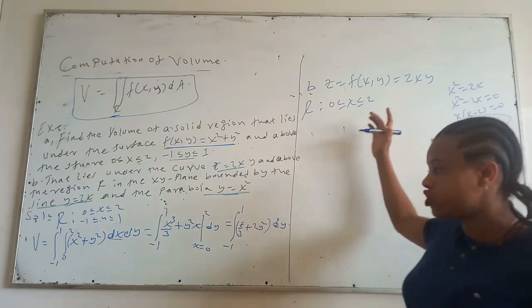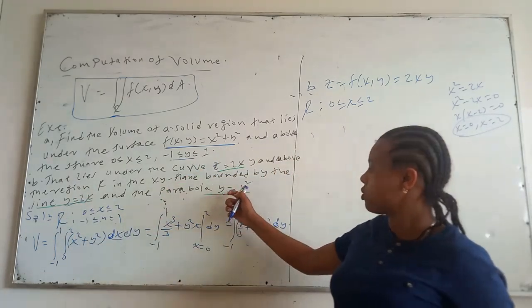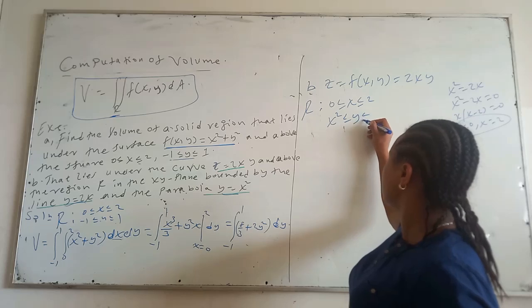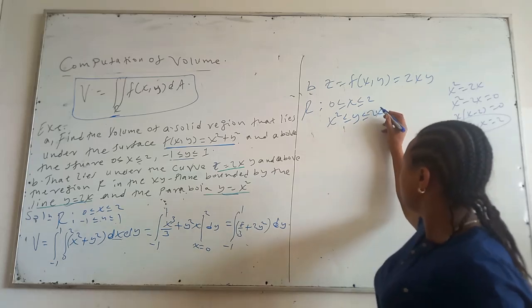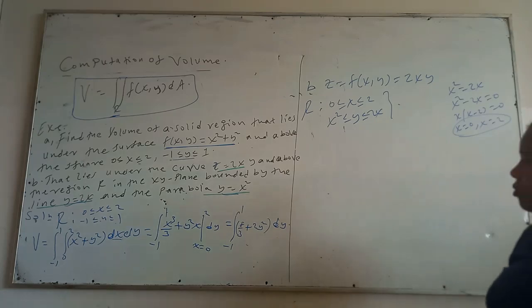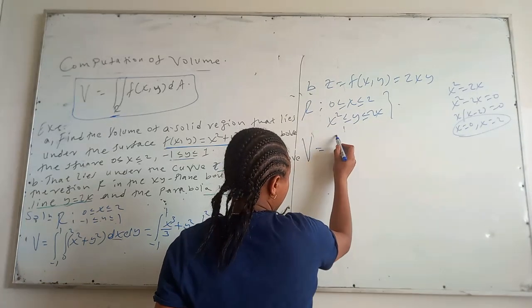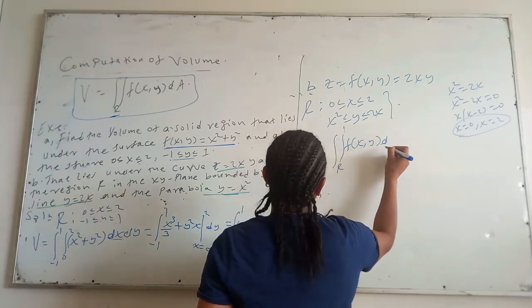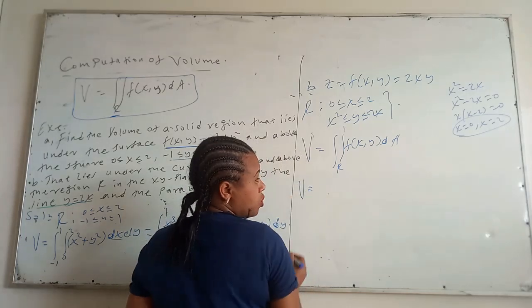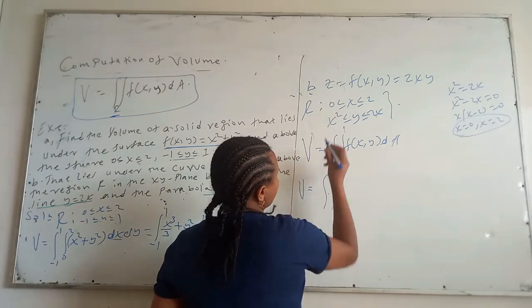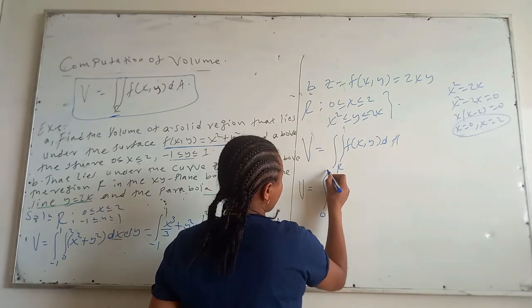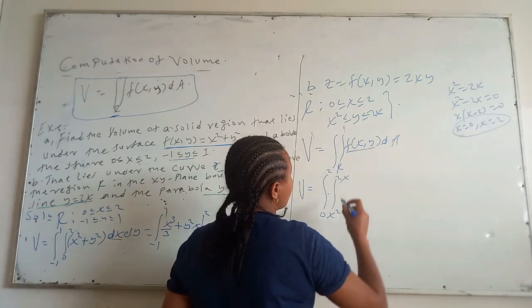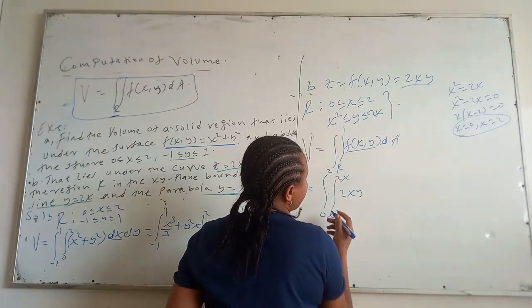The volume of this solid will be written as the double integral over R of f(x, y) dA. The limits are x from 0 to 2, y from x squared to x. The function f(x, y) is 2xy, so the volume is the double integral from 0 to 2, from x squared to x, of 2xy dy dx.